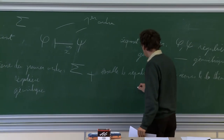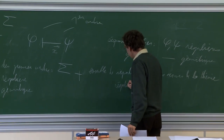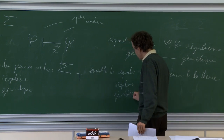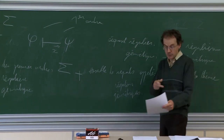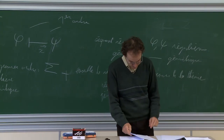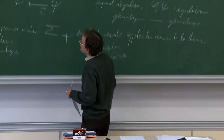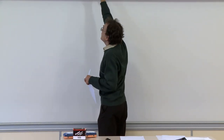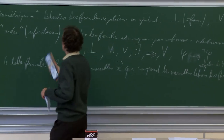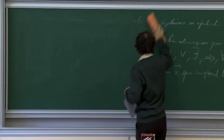We have finished with the syntax and can now pass to semantics — that is, to interpretation. Could you give two or three examples of familiar things that are geometric or not? For example, are there simple examples of theories that are not first order? First order means the axioms bear only on elements, not on collections of subsets of a given set.